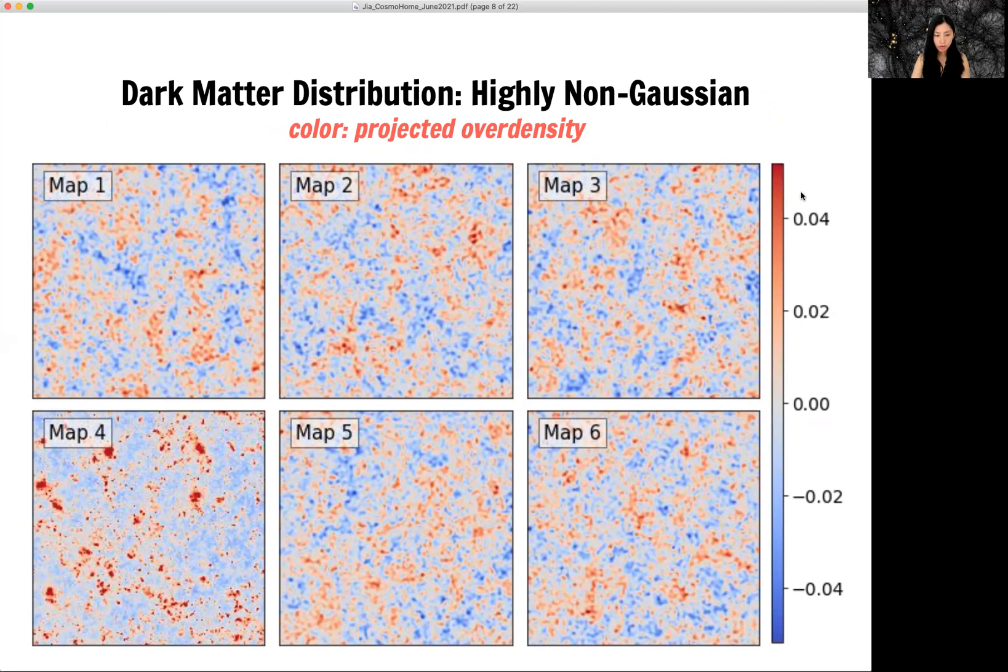The red points are over-dense regions, and the blue points are under-dense regions. If you only spent three seconds on these maps, you can already tell that map four is very different. So all other five maps are Gaussian random fields, while map four is from numerical simulation, or you can consider it as closer to the reality of our universe.